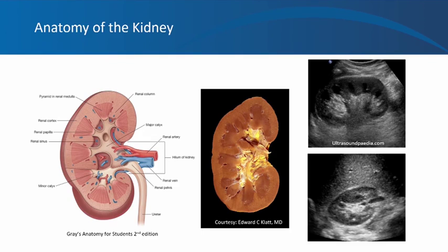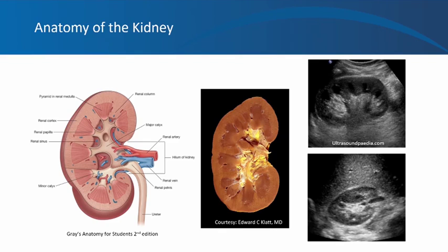On grayscale ultrasound, a longitudinal image of the kidney shows a bright cortex giving it a bean shape, making it easily identifiable. The cortex is hypoechoic; we typically compare its echogenicity to the liver on the right and the spleen on the left. The medullary pyramids appear black or hypoechoic on most occasions. The brightest structure after the capsule is the sinus fat. In a normal kidney, the collecting system or renal pelvis area is not black unless urine backs up, which is hydronephrosis.